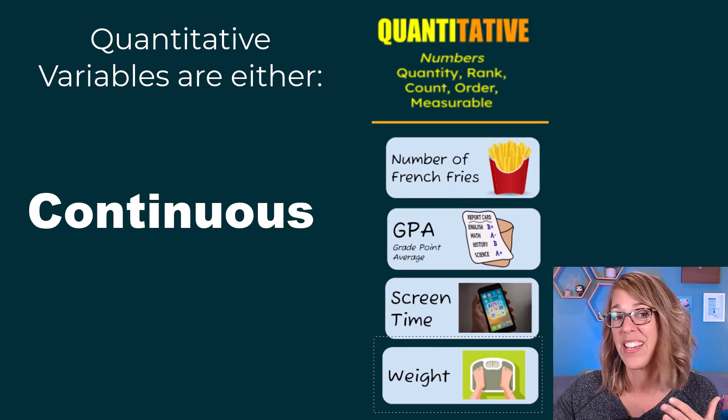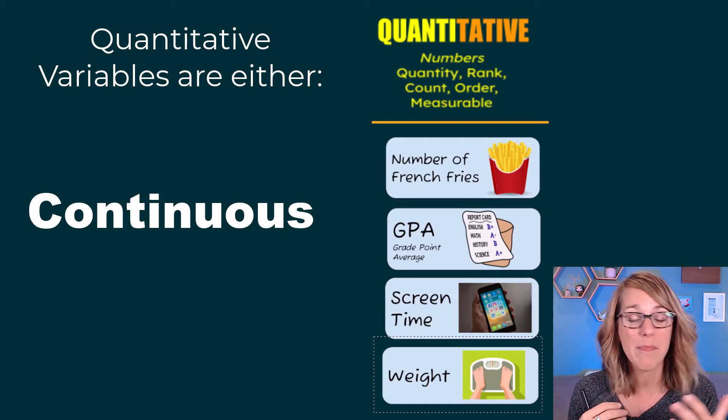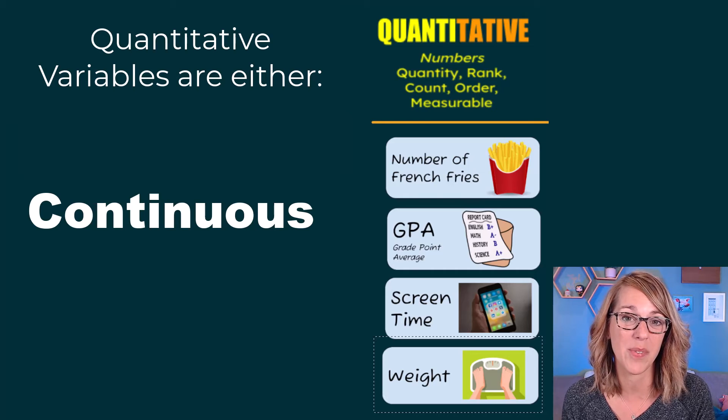Age is another great example of a continuous variable because you're continually aging, right? I am now this old, another second older, another second older. Time, temperature, weight, age, height. Those are all great examples of continuous variables.